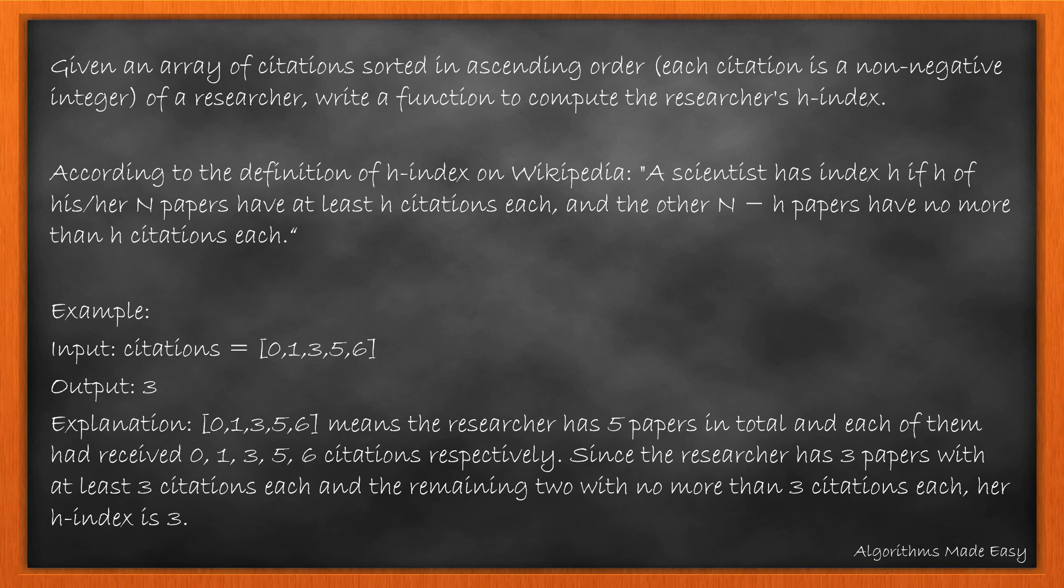For the example given, the input means the researcher has 5 papers in total and each of them had received 0, 1, 3, 5, and 6 citations respectively. Since the researcher had 3 papers with at least 3 citations each and the remaining 2 with less than or equal to 3 citations each, her H-index is 3.